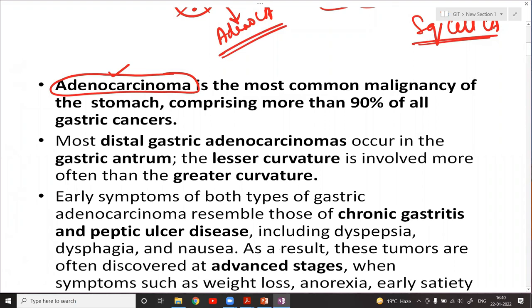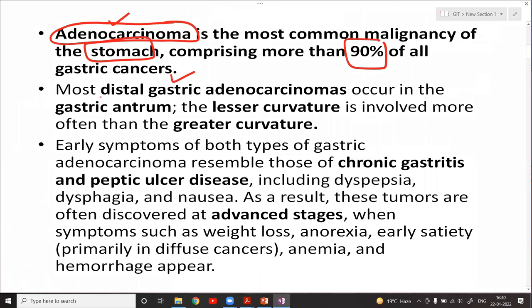The most common site of gastric adenocarcinoma is the gastric antrum. The lesser curvature is involved more than the greater curvature. Importantly, the lesser curvature is also the important site of gastric peptic ulcer.